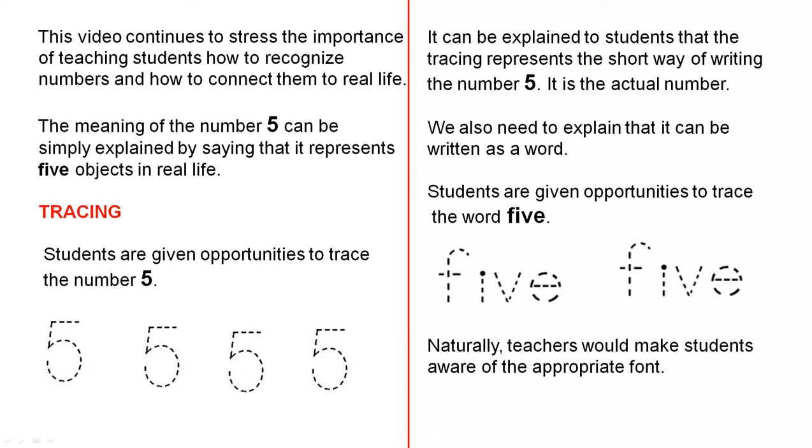It can be explained to students that the tracing represents the short way of writing the number 5. It is the actual number. We also need to explain that it can be written as a word. Students are given opportunities to trace the word five. Naturally, teachers would make students aware of the appropriate font.